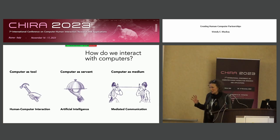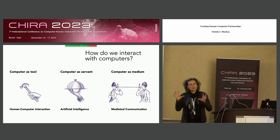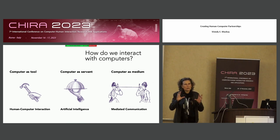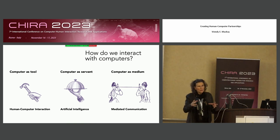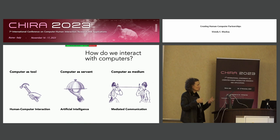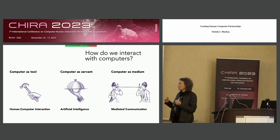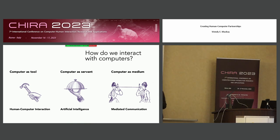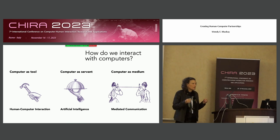How do we interact with computers? I will argue that we have various different strategies for thinking about the design of interactive systems. We can think of the computer as a tool that we use to accomplish things — here we show a hammer and a nail. If you're coming from human-computer interaction, that is often what we're doing: creating tools for users.